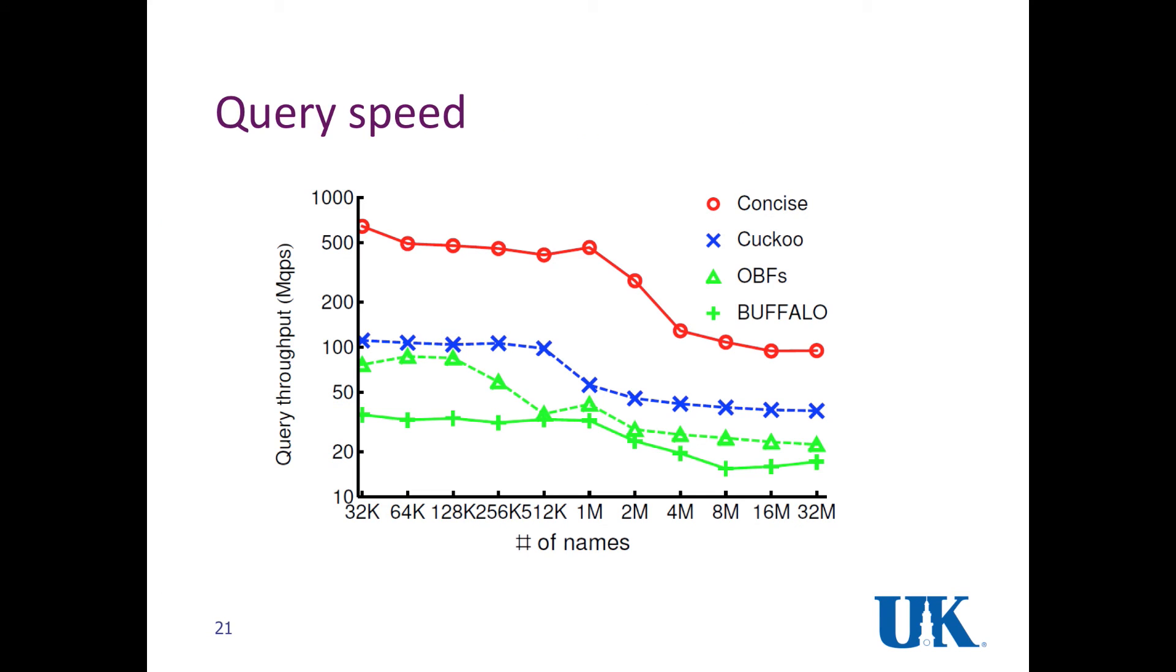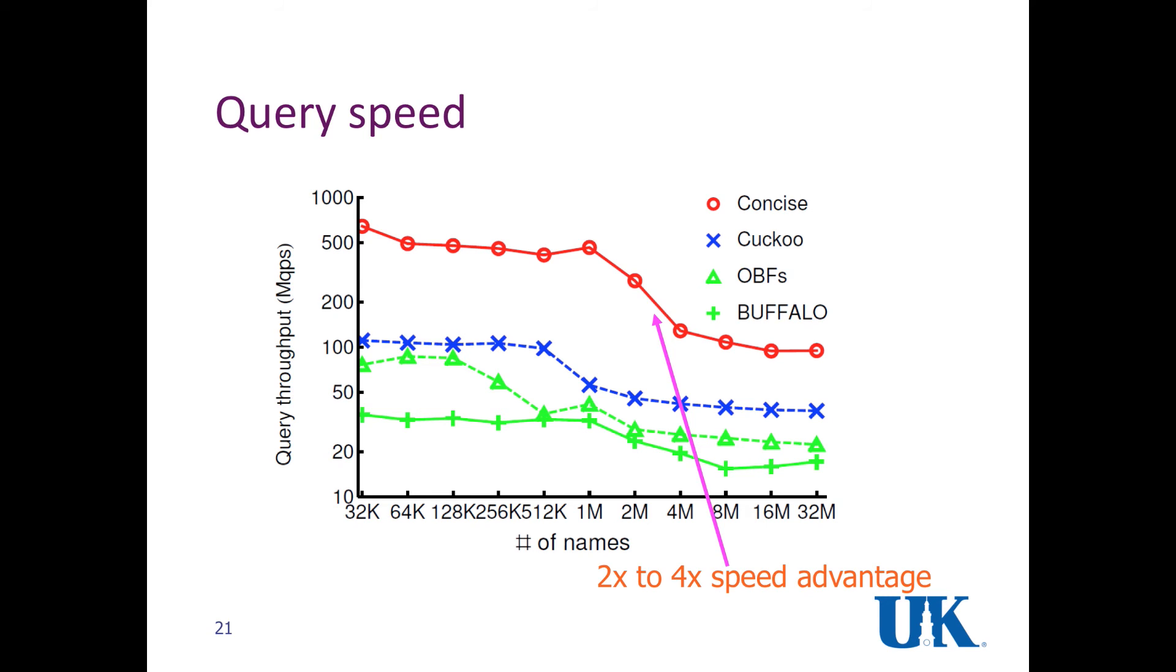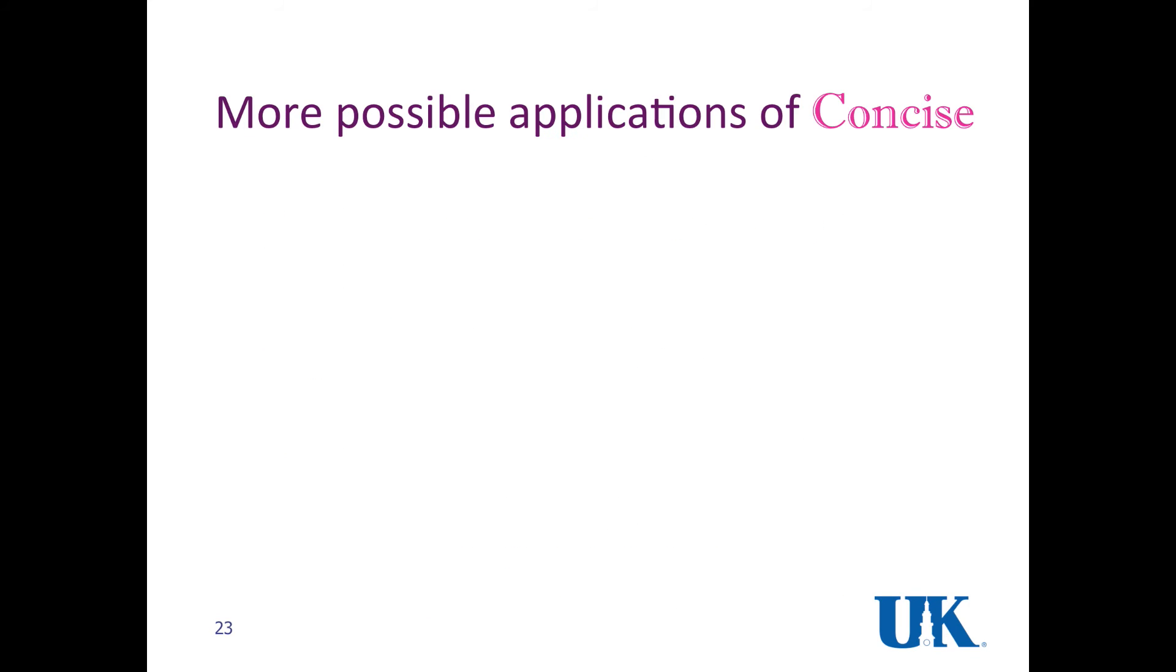This is query speed. We find that the concise query speed is always higher than a hundred millions of queries per second. It has about two times or four times speed advantage compared to Cuckoo Hash. This is the update speed of concise by varying the memory budget. We can see that the update speed can always be higher than one million updates per second. Note, this update, each update is a network-wide update, not just a single update on a particular FIB.